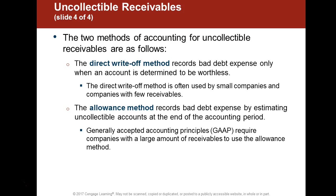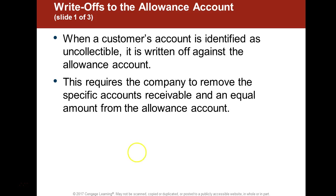There are two methods for handling bad debts. The GAAP method is the allowance method, and the tax method is the direct write-off method. The allowance method uses the matching principle — matching the expense with the revenue. It is an important measure for calculating what you might not receive from your clients. The direct write-off method means you write it off only when you know it's worthless, and that is acceptable for tax purposes.